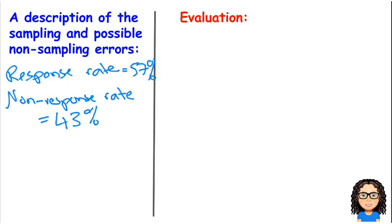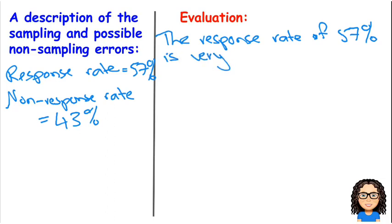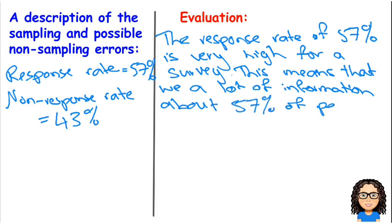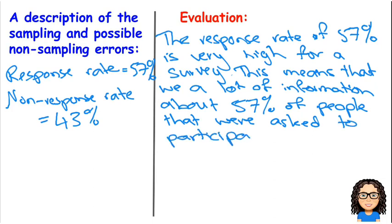So for a survey, a response rate of 57% is actually really great. So part of my evaluation is to say, the response rate of 57% is very high for a survey. This means that we have a lot of information about 57% of people that were asked to participate. So that's a good thing.